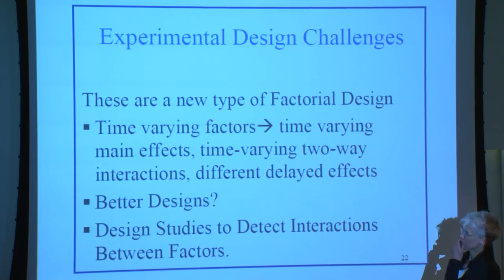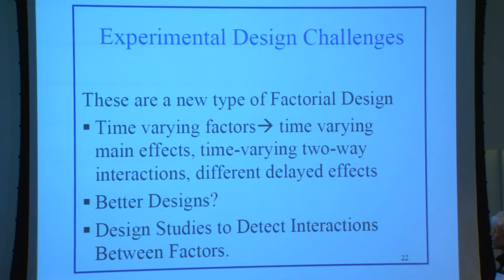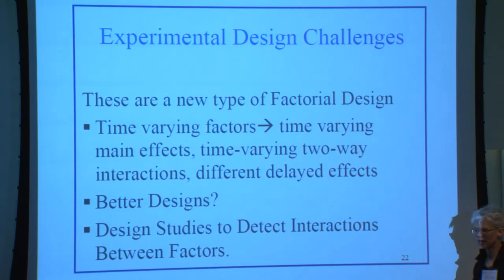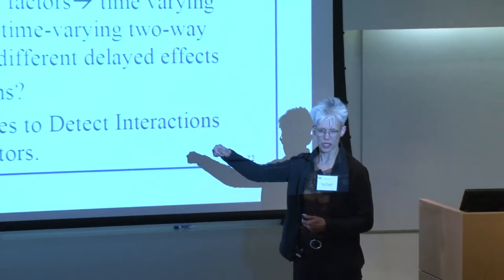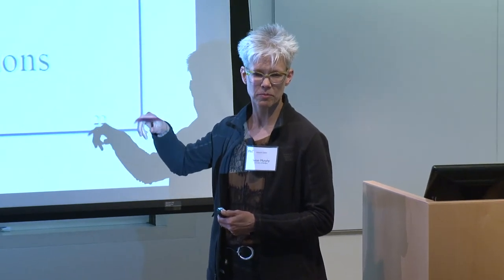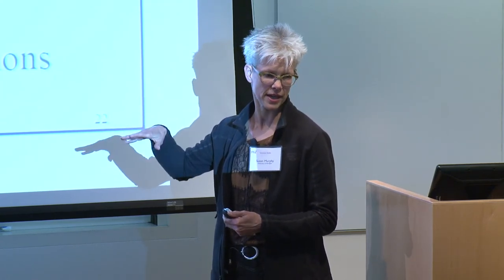Some statistical challenges: these are a very different type of factorial design. We have time-varying treatment factors, leading to time-varying main effects, time-varying two-way interactions, and delayed effects. I am positive there must be a better way to design these studies. There is enormous interest in detecting interactions between the factors — for example, between the evening goal-setting intervention and the momentary suggestion intervention — because that's closer to the theories the scientists have, but I don't know how to do that yet.